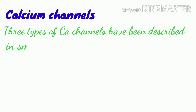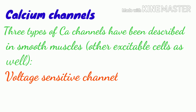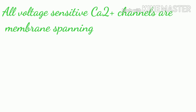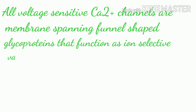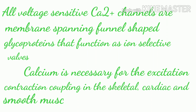Calcium channels: three types of calcium channels have been described in smooth muscles and other excitable cells — the voltage-sensitive channel, receptor-operated channel, and leak channel. All voltage-sensitive calcium channels are membrane-spanning, funnel-shaped glycoproteins that function as ion-selective valves. Calcium is necessary for excitation-contraction coupling in skeletal, cardiac, and smooth muscle.